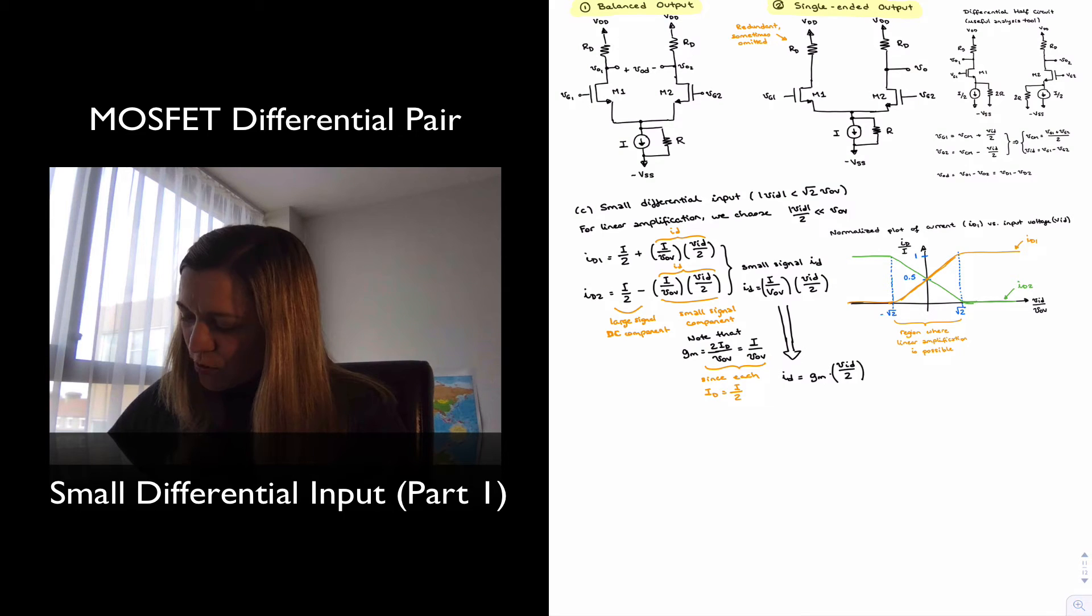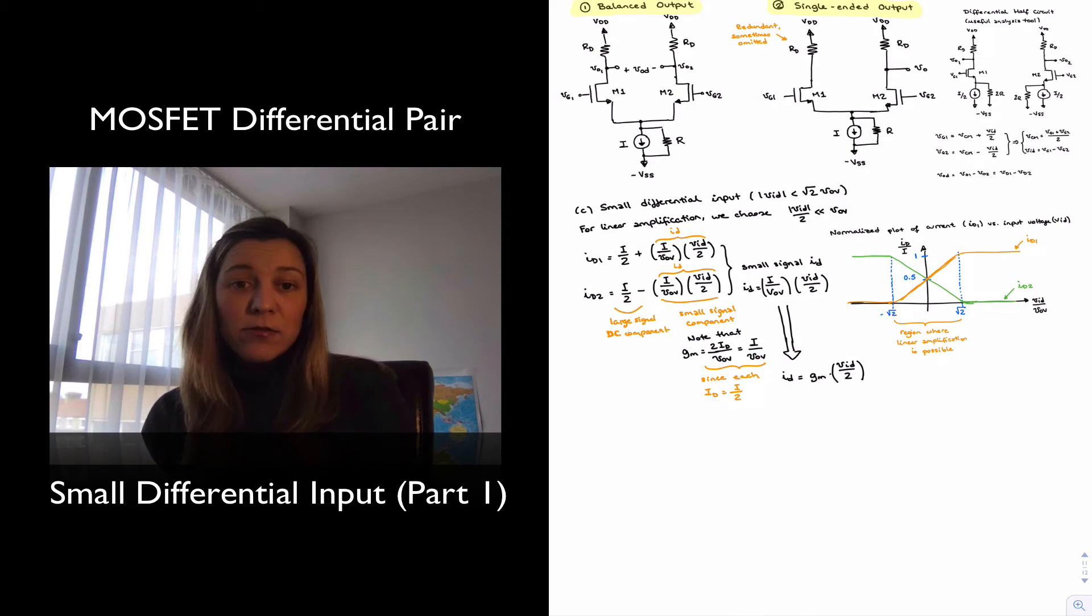And so this will be the expression for the small signal ID, which makes sense. The small signal ID will be the output and the output will be the transconductance output current equals transconductance times input voltage, which is VAD halves. VAD halves because the ID is the small signal current, the small incremental current in each one of the branches. Now, before we keep going, talking about ID, little ID, and the small signal analysis, I do want to point out something.